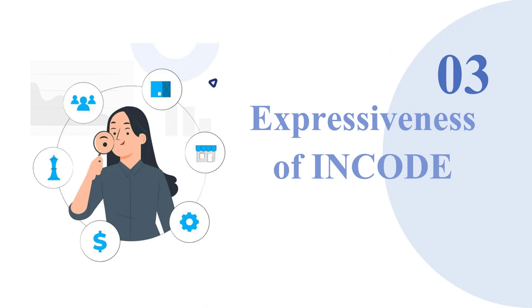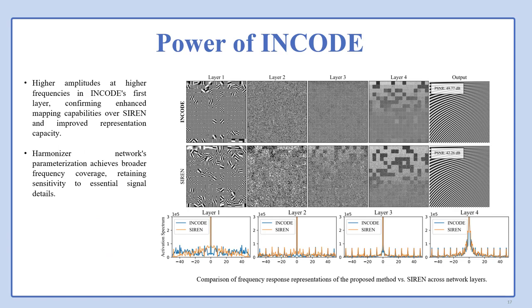Let's discuss the expressiveness of ENCODE. We have visualized the activation function of ENCODE and SIREN, and also provide the frequency response of ENCODE versus SIREN across network layers. Higher amplitudes at higher frequencies in ENCODE's first layer confirm enhanced mapping capabilities over SIREN and improved representation capacity. It has much more representation capacity than SIREN, specifically in the first layer. As you can see in the frequency response, it tries to intensify high-frequency details. Also, the harmonizer network's parameterization achieves broader frequency coverage, retaining sensitivity to essential signal details.